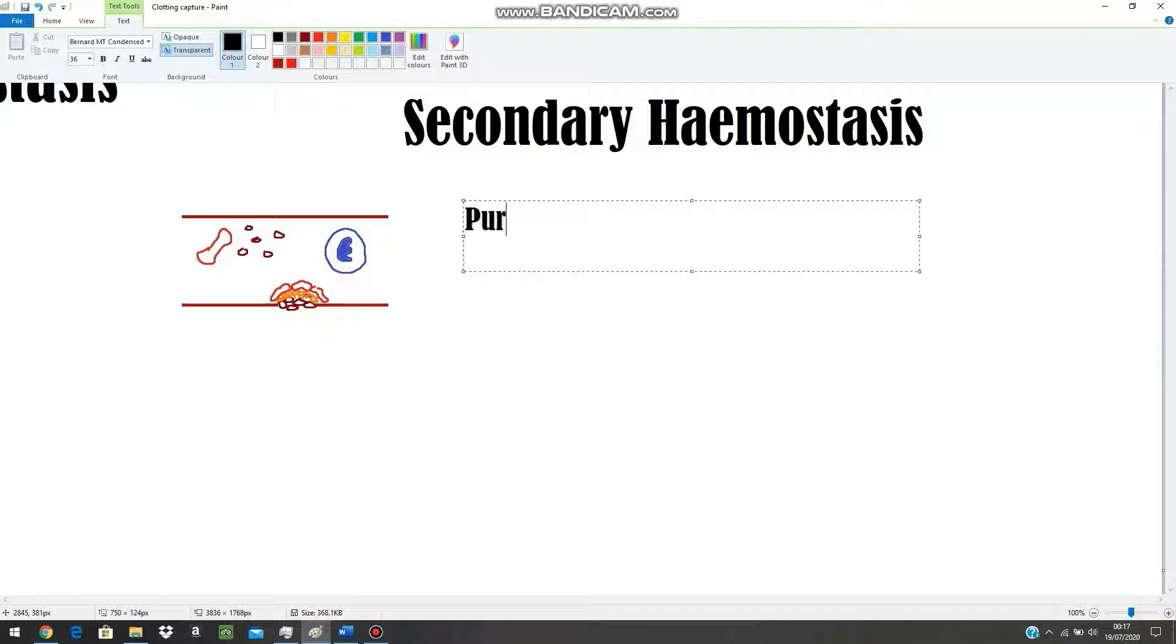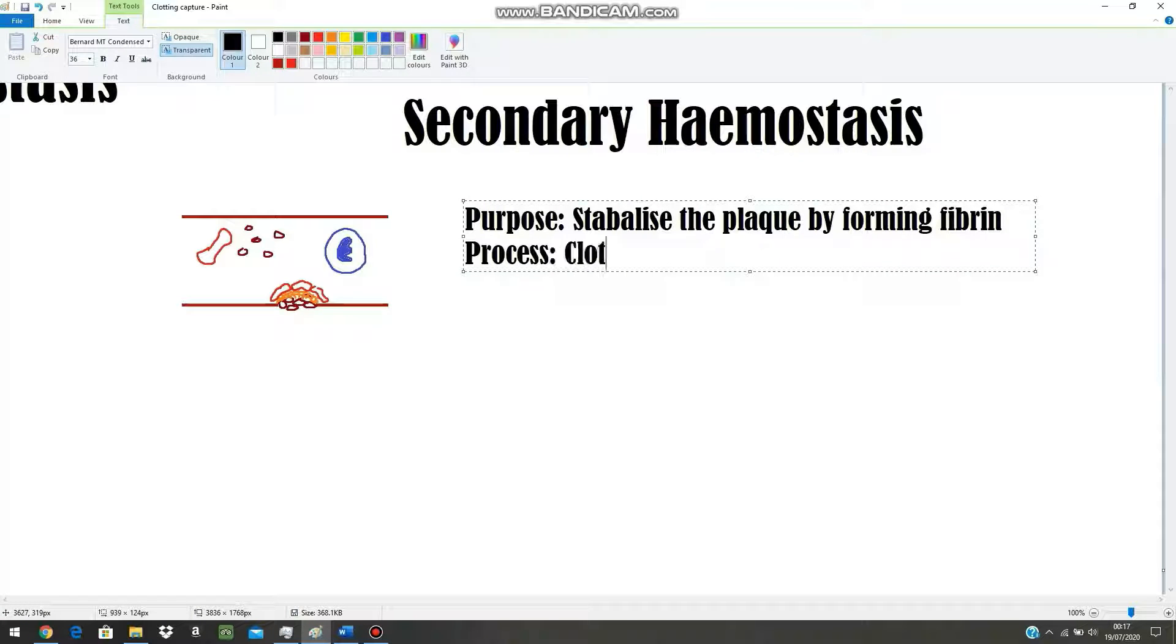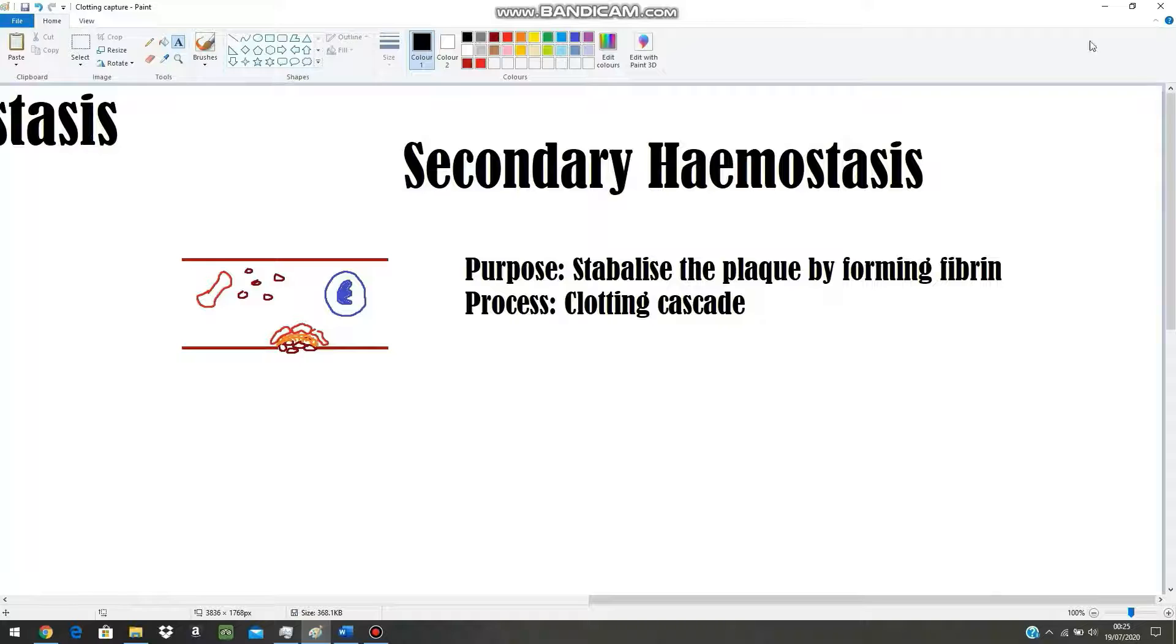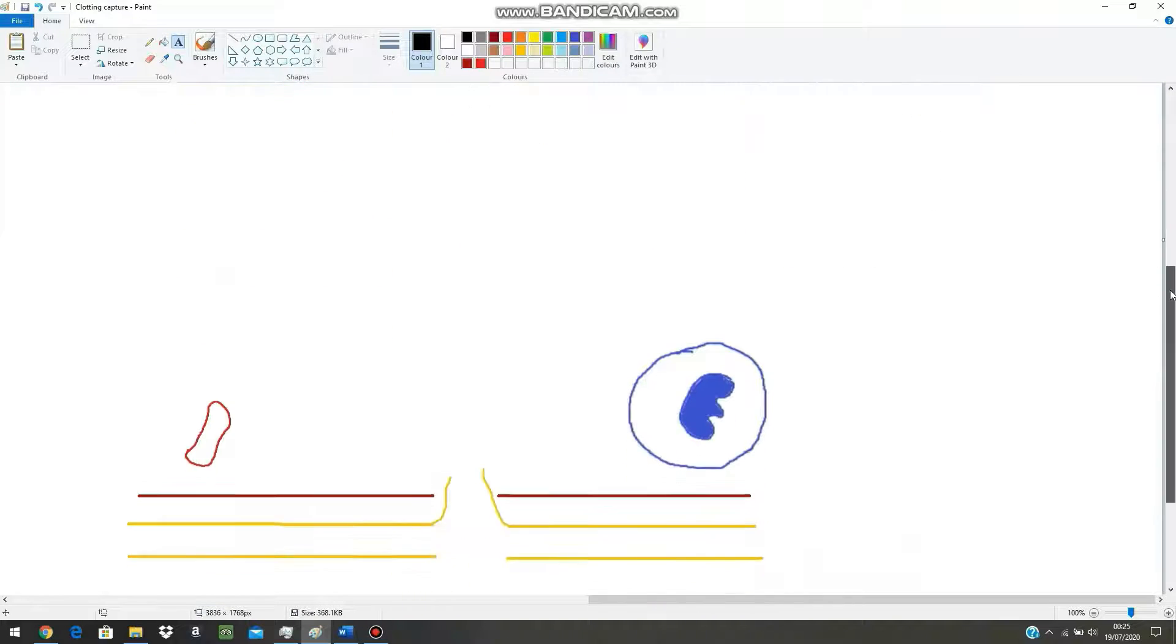Let's have a look at secondary haemostasis. So what's our purpose here? Well, our purpose is to stabilize the plaque we've formed by forming a layer of sticky fibrin sheath over it so we can grab onto passing red cells. And what process are we going to go through to form this sheath? Well, this is something that we call a clotting cascade. The word cascade here refers to the fact there's going to be lots and lots of reactions.